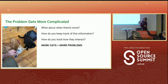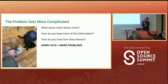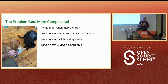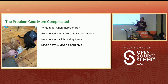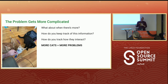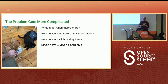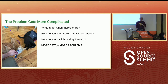Now the problem gets more complicated. What happens when there's more cats? How do you keep track of this information and how do you track how they interact? More cats equals more problems. We actually have four cats. It's not just about knowing one — if one's sick, it gets the other sick. If one cat fights another cat, it causes issues for the whole household.